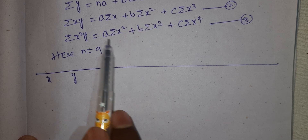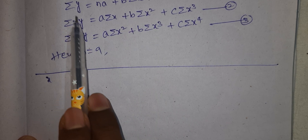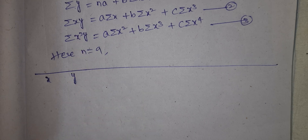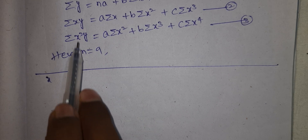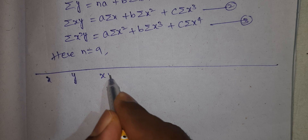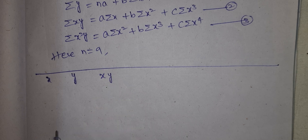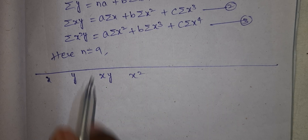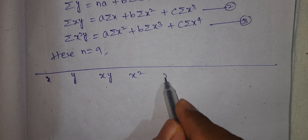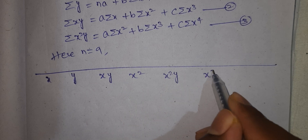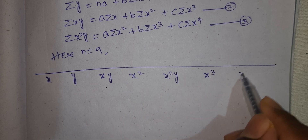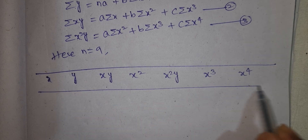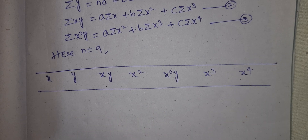Summation x is the same. Summation y is the same. We have x times y, so xy. Next, x squared. We have x squared times y. Then x cubed. Then x to the power 4. We will do this. So this table will be calculated.